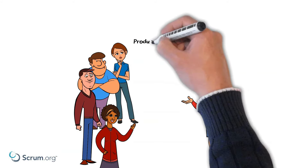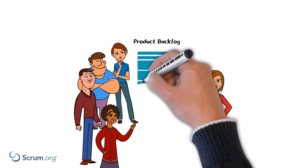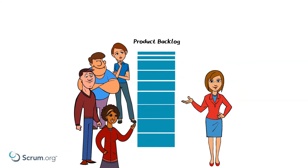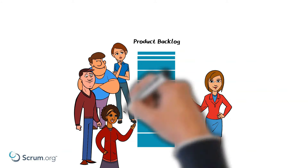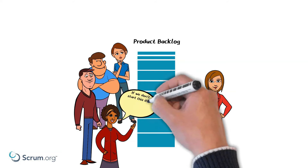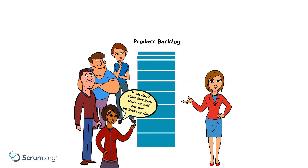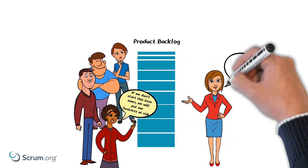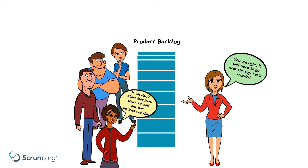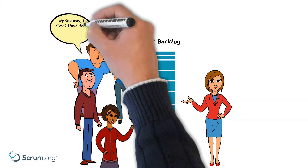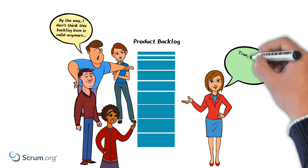Next, Cassie shows the Product Backlog, which is a list of things that are needed to improve the product. She has already ordered the backlog and put what she believes to be the most important items at the top. Cassie and the developers, Steve, Blake and Nisha, discuss the order of the backlog. Nisha points out a Product Backlog item that's lower on the backlog, and she raises her concern that if the team does not do this item earlier, their business can be at risk. Cassie realises her concern is valid, and they agree the Product Backlog item should be nearer to the top. They also find there is a Product Backlog item in the backlog that is not relevant anymore, so they removed that one.